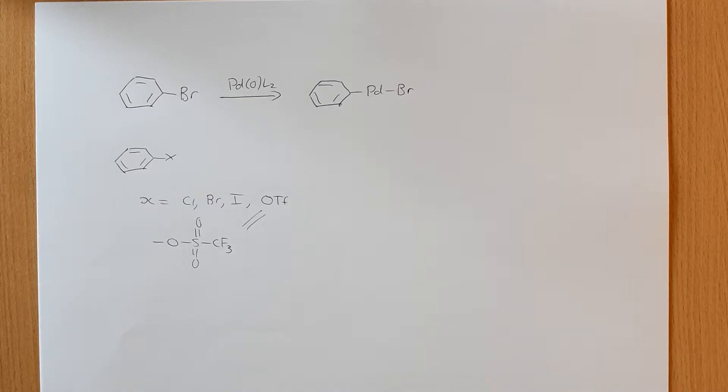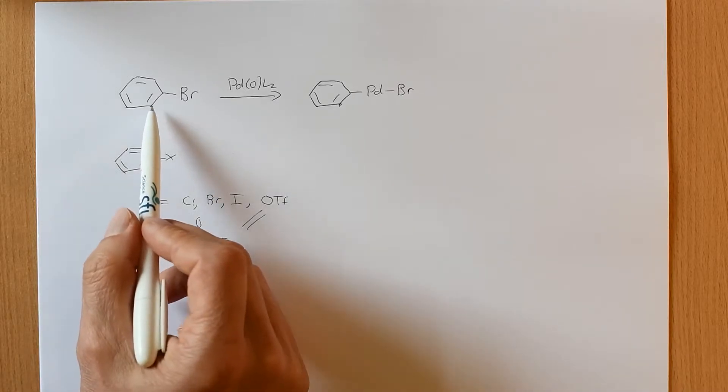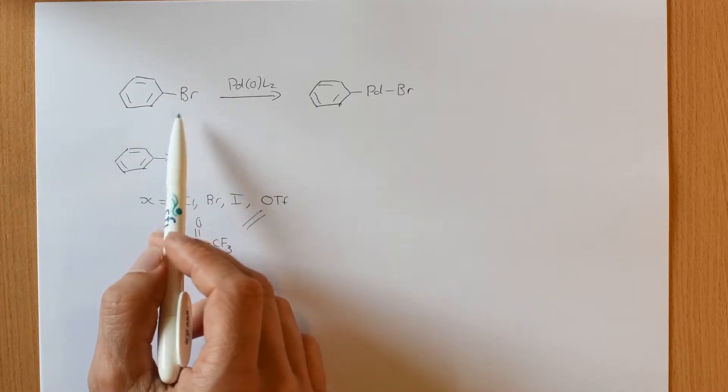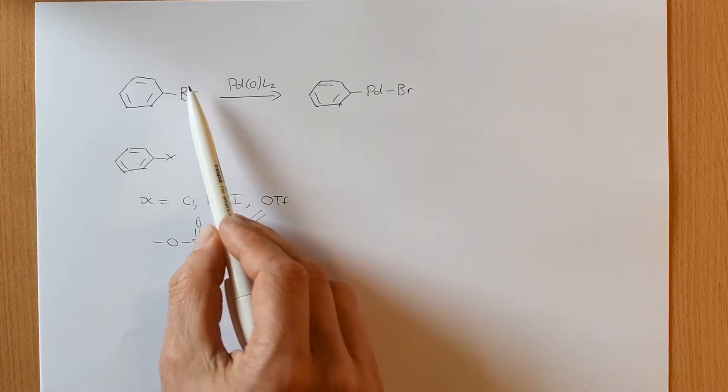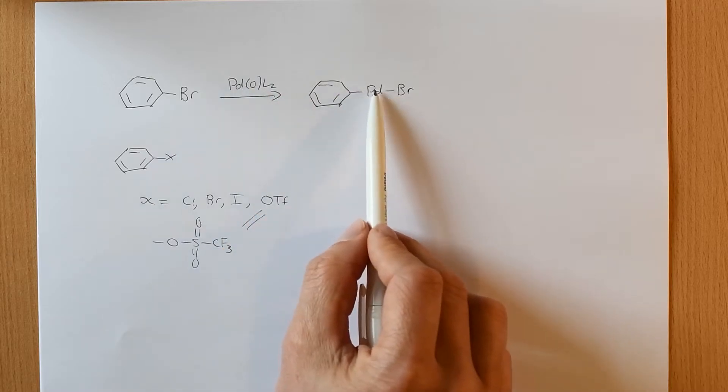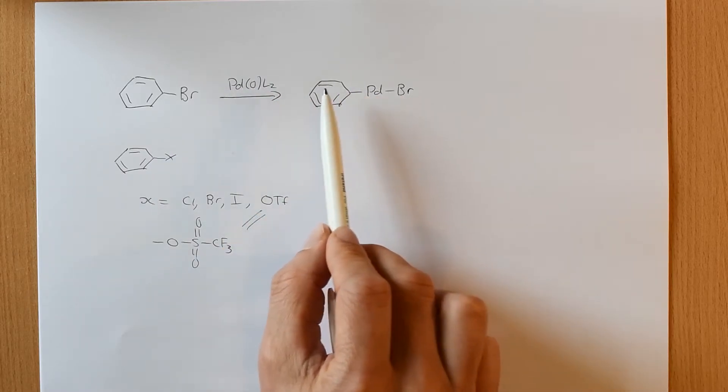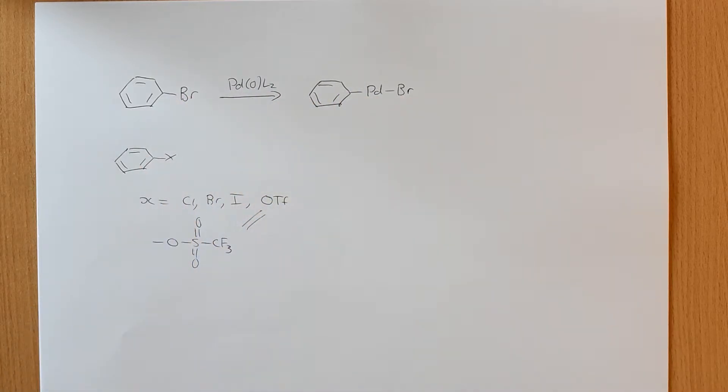The main factor is the electronic factor. If you have large bulky groups ortho to these, then you won't get oxidative insertion because sterics will get in the way. But the main factor is usually electronics. If you think about what we're trying to do here, we're inserting a palladium into this bond. The stronger the carbon-bromine bond is, the poorer the reaction, or the slower the reaction is going to be.